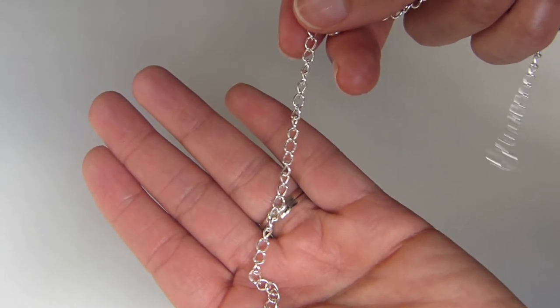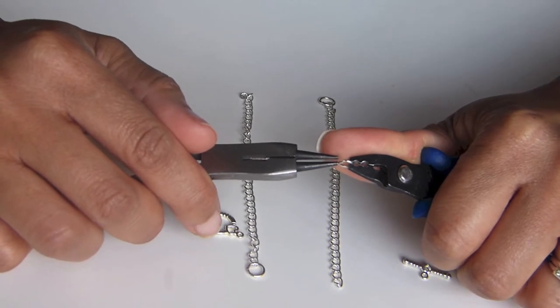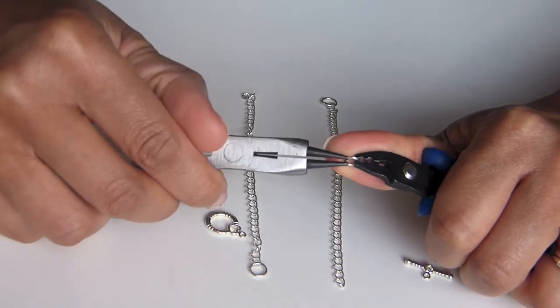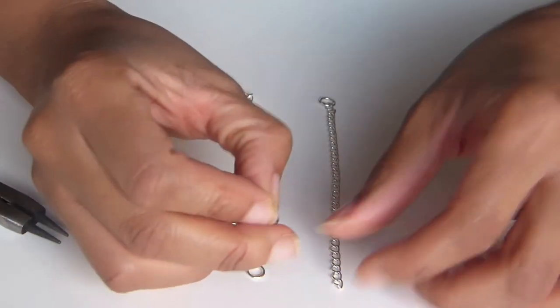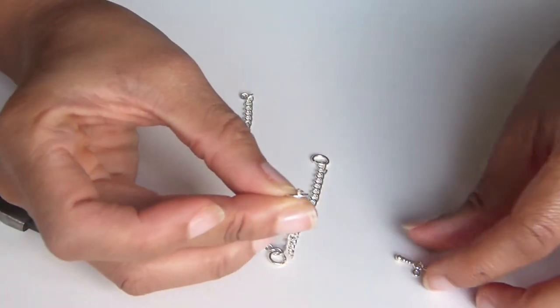I have already previously cut my chain into a short length. I'm going to start off by showing you the opening and closing of the jump ring because you're going to do this on either side of your already cut chain.